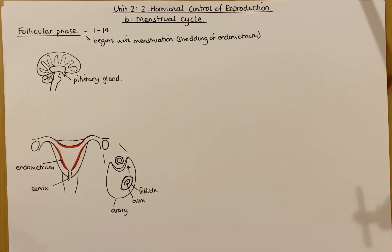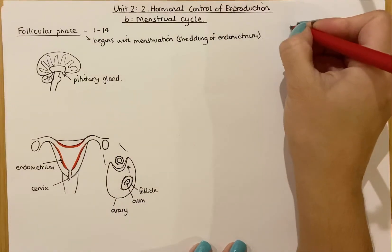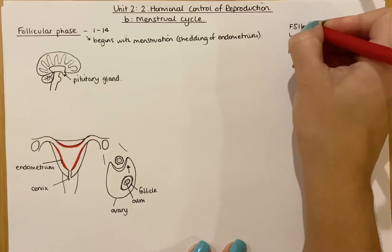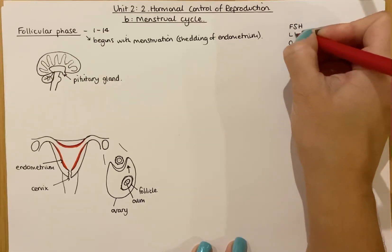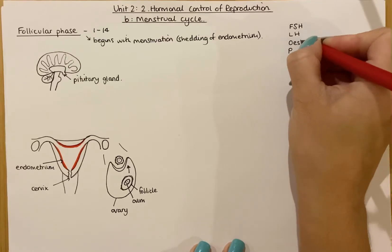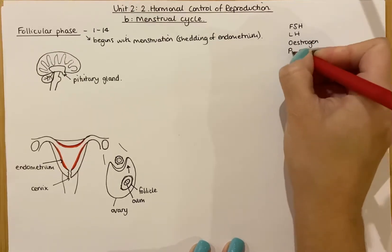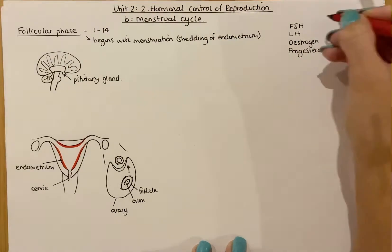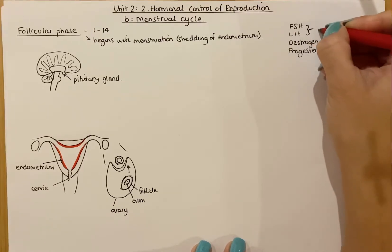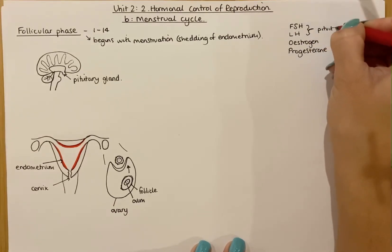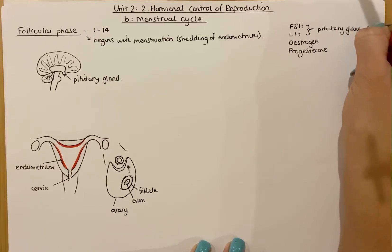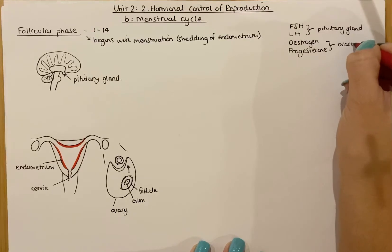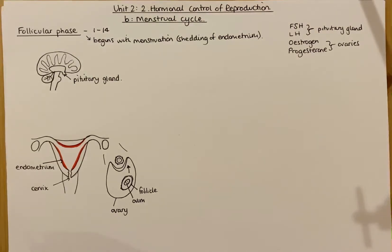In terms of the female hormones you need to know, remember them with the acronym FLOP: F is for FSH, L is for LH, O is for oestrogen, and P is for progesterone. Two of these hormones, FSH and LH, are produced by the pituitary gland at the base of the brain. The other two are produced in the ovaries, by particular structures in the ovaries.